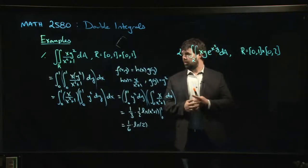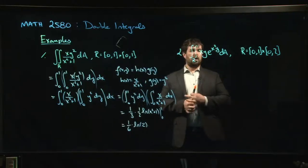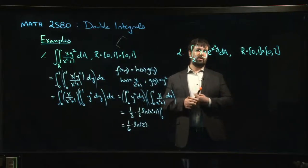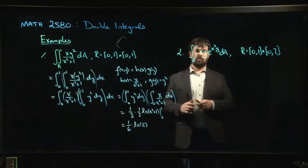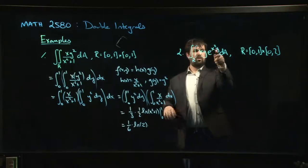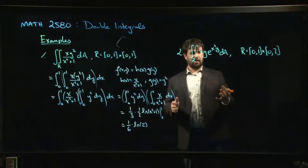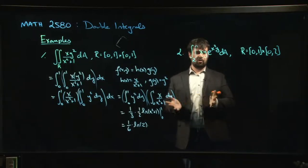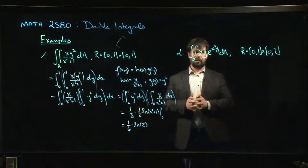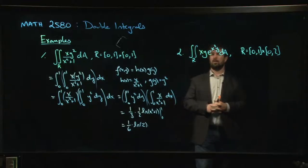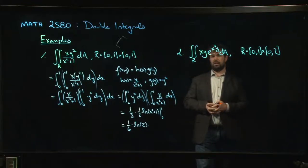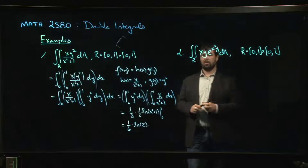What about the next one? In this case, you can see that we can't use the product trick, because there's an x squared times y inside the exponential — we can't factor things out or split it up. But we can still write it as an iterated integral.